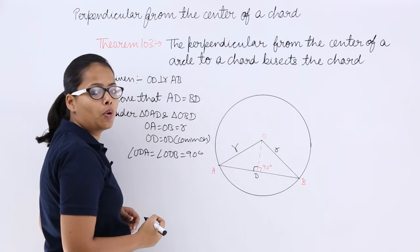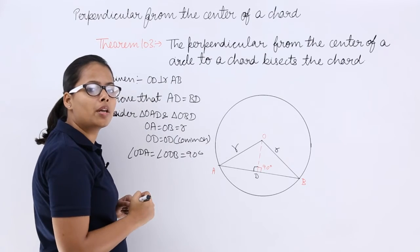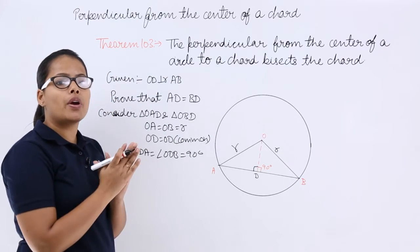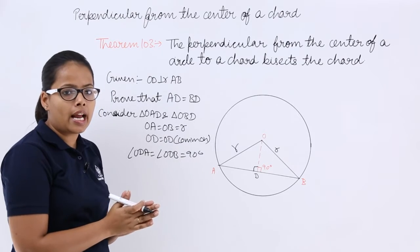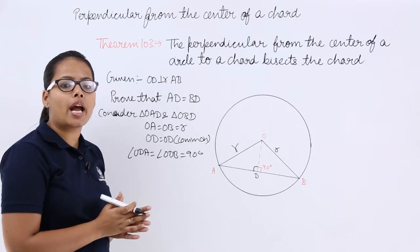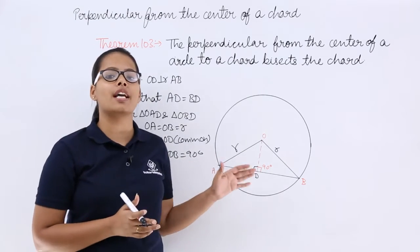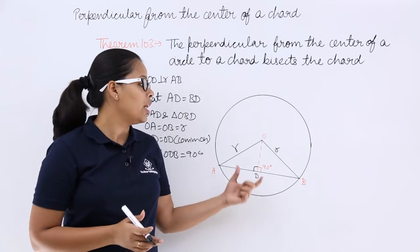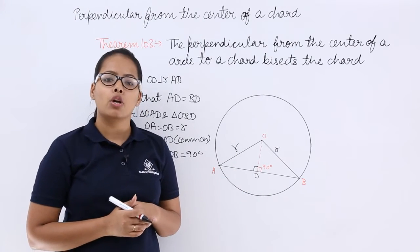You know that one of the sides is equal, which is OD, because this is common to both. From the RHS rule, which says when triangles are right angle triangles and the hypotenuse of those two triangles are equal and one of the sides are equal, then those two triangles will be congruent.